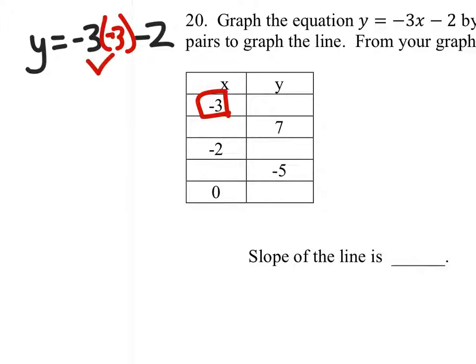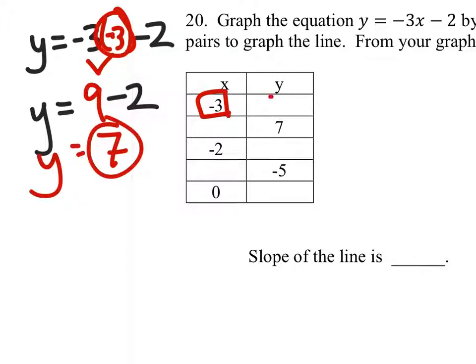And negative 3 times negative 3 is 9, so y equals 9 minus 2. So see how we're solving for y, that's the value that we're going to put in the box there. So 9 minus 2 is 7. So when x is negative 3, y is 7, which gives us this ordered pair, which will not fit on the graph. Whatever.